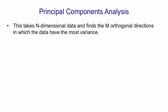In principal components analysis, we have n-dimensional data, and we want to represent it using less than n numbers. And so we find m orthogonal directions in which the data has the most variance, and we ignore the directions in which the data doesn't vary much.